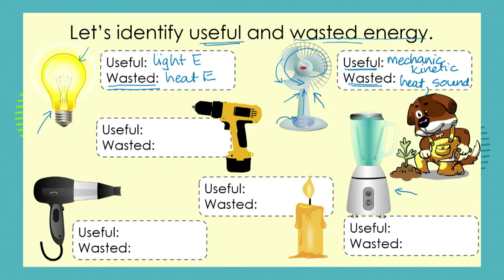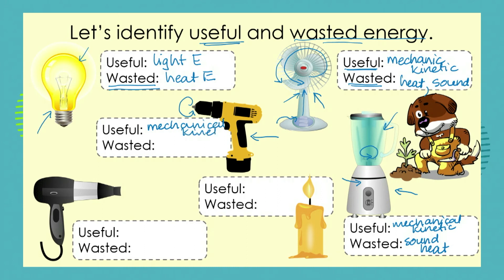What about this item — a blender or a food processor? The useful energy is very similar to the fan: we want the blades to turn, we want mechanical kinetic energy. But the wasted energy — you can't speak to anyone when the blender is working because there is so much sound energy produced. And also, if you touch the motor, you'll find that it gets hot. In fact, on the instructions you'll probably read: don't use the blender for more than a minute at a time because the motor will overheat. Let's look at the drill. Useful energy, once again, is the mechanical kinetic energy. But our wasted energy — again, a loud noise, sound — and touching where the motor is, you'll feel that it produces heat energy as well.